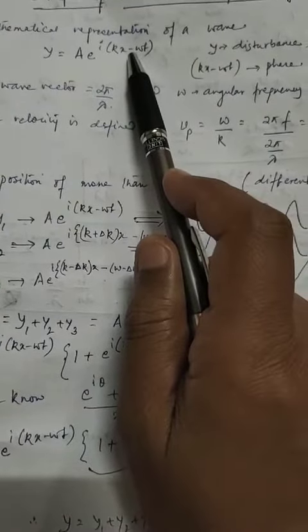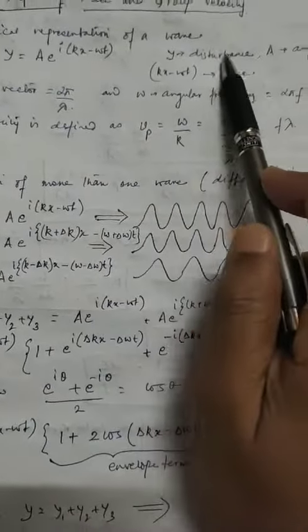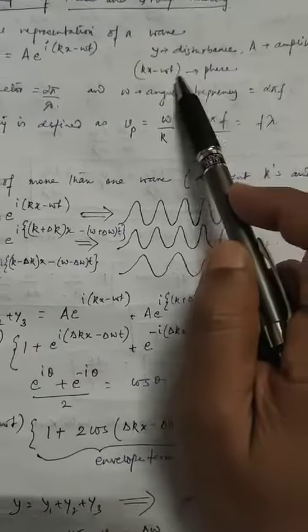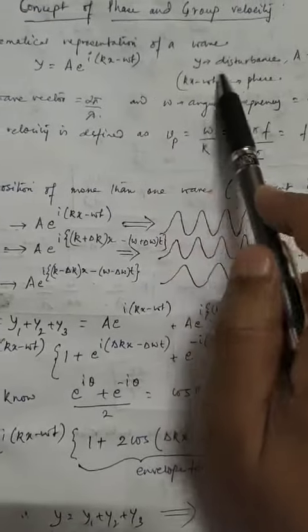This is a mathematical representation of a wave where y is the disturbance, a is the amplitude, and kx minus omega t is the phase.